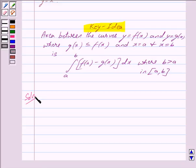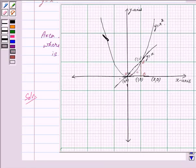Now y equals x squared is a parabola with vertex at origin and symmetric about the y-axis. So we have this parabola y equals x squared with vertex at origin, symmetric about the y-axis.